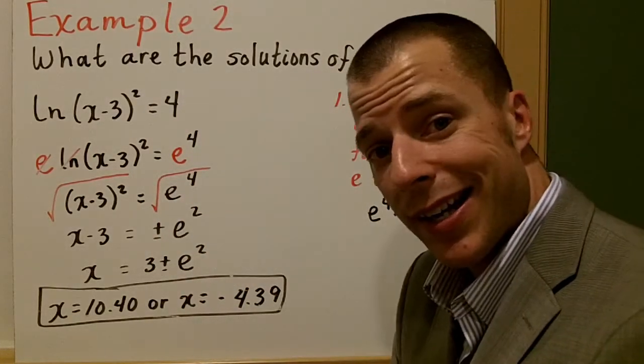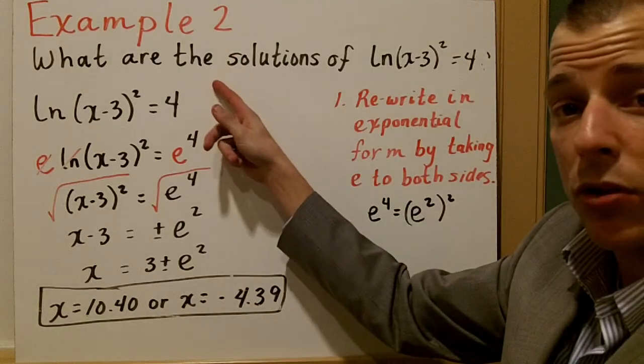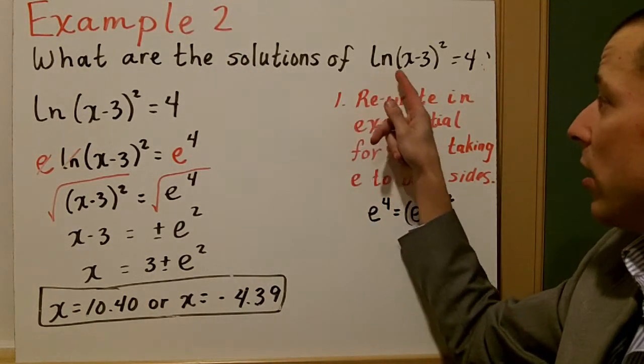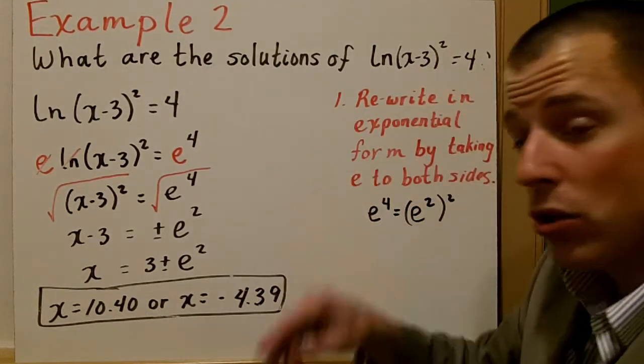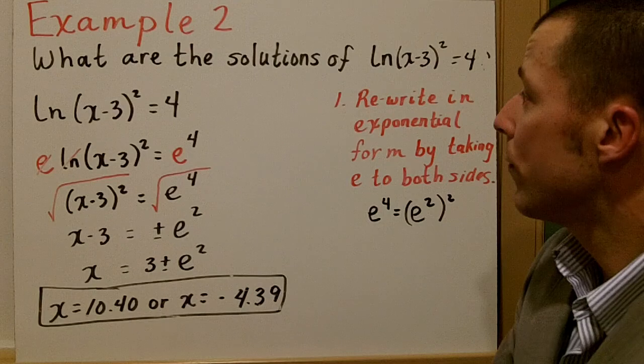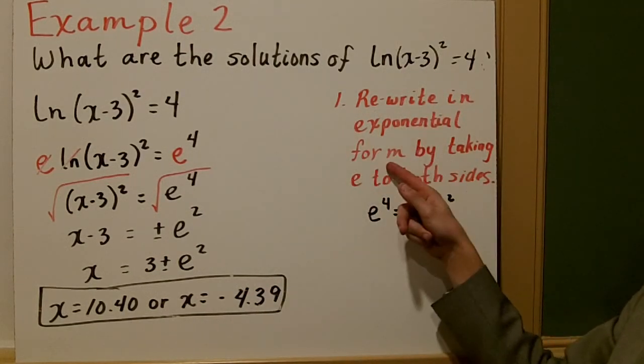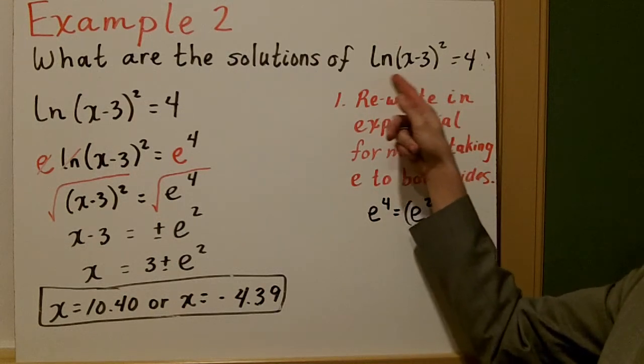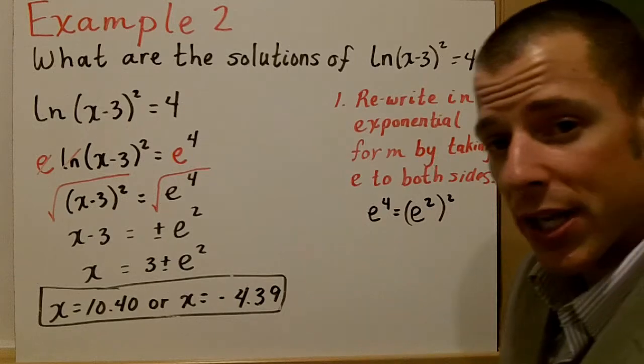In the second example here, we want to know what are the solutions of natural log of (x minus 3) squared equals 4. There's going to be 2 of them. First thing we have to think about doing is rewriting our natural log equation in exponential form, and we're going to take e to both sides. We're going to raise each side to the e.